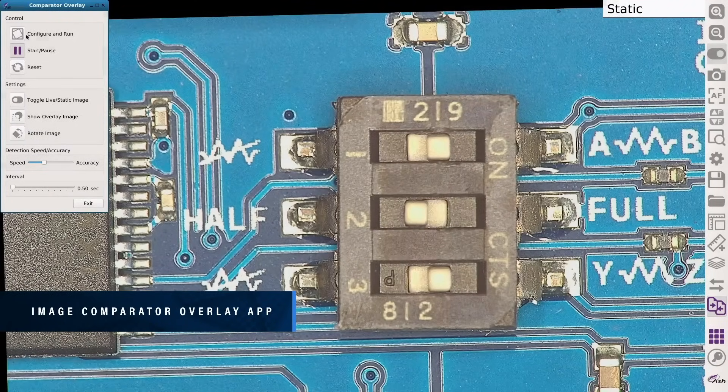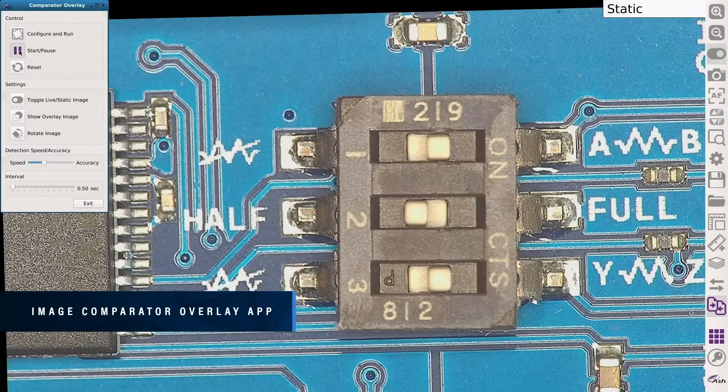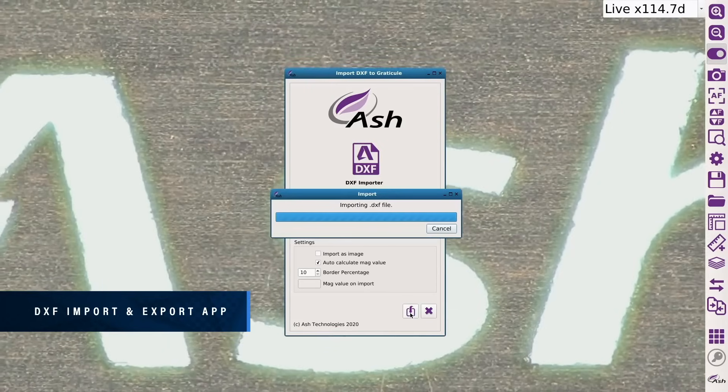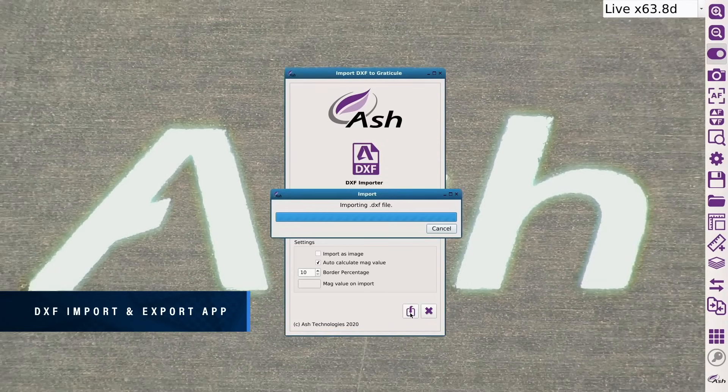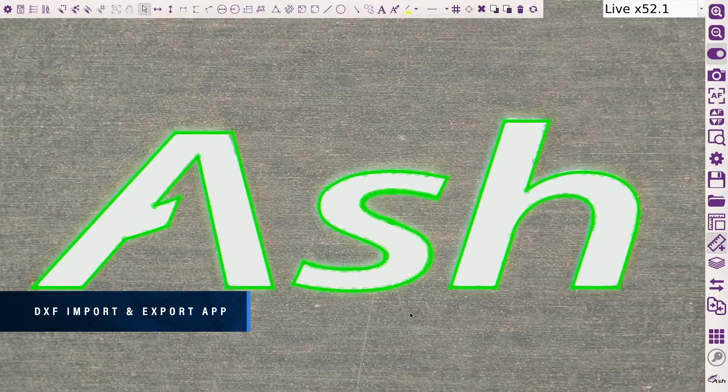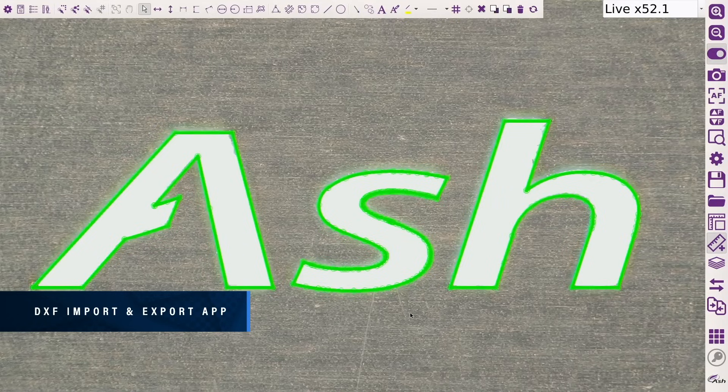Remove the need for a costly jig with the power of automatic alignment. Import and export DXF files from any CAD package to create graticules for overlay comparison with parts. Compare your manufactured parts to DXF files in a matter of seconds.